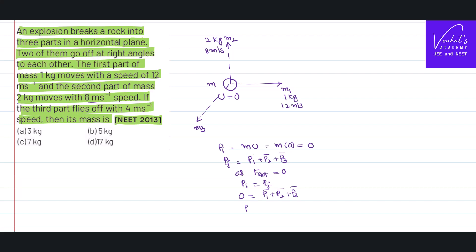This is not just numbers — it is vectors. So p3 = −(p1 + p2). The direction of p1 and the direction of p2 are perpendicular, so the resultant of p1 and p2 will be somewhere in between them. p3 will be equal in magnitude but in the opposite direction to (p1 + p2). That is the meaning of this equation. Their magnitudes are equal, so let us find the magnitude of p1 + p2.